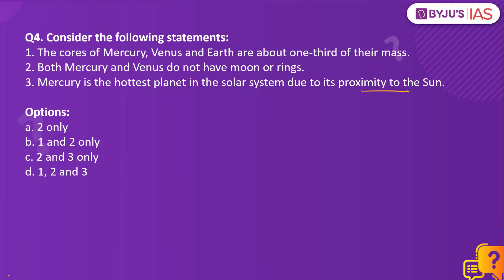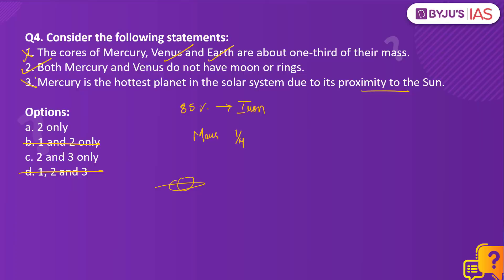Statement 1 is wrong because Mercury has a dense iron core — Mercury is 85% core by volume and largely made up of iron. However, the cores of Earth and Venus are about one-third of their mass, and Mars has a small core that is only about one-quarter of its total mass. With elimination we are left with options A and C. Statement 2 is correct — both Mercury and Venus could not get rings because of their proximity to the Sun; powerful solar winds melt and destroy any icy rings, and both planets also have no Moon. Venus, not Mercury, is the hottest planet in our solar system, making Statement 3 also incorrect. Therefore the right answer is option A — 2 only. Such factual information is important to revise as these are questions you cannot afford to lose marks on in your prelims exam.